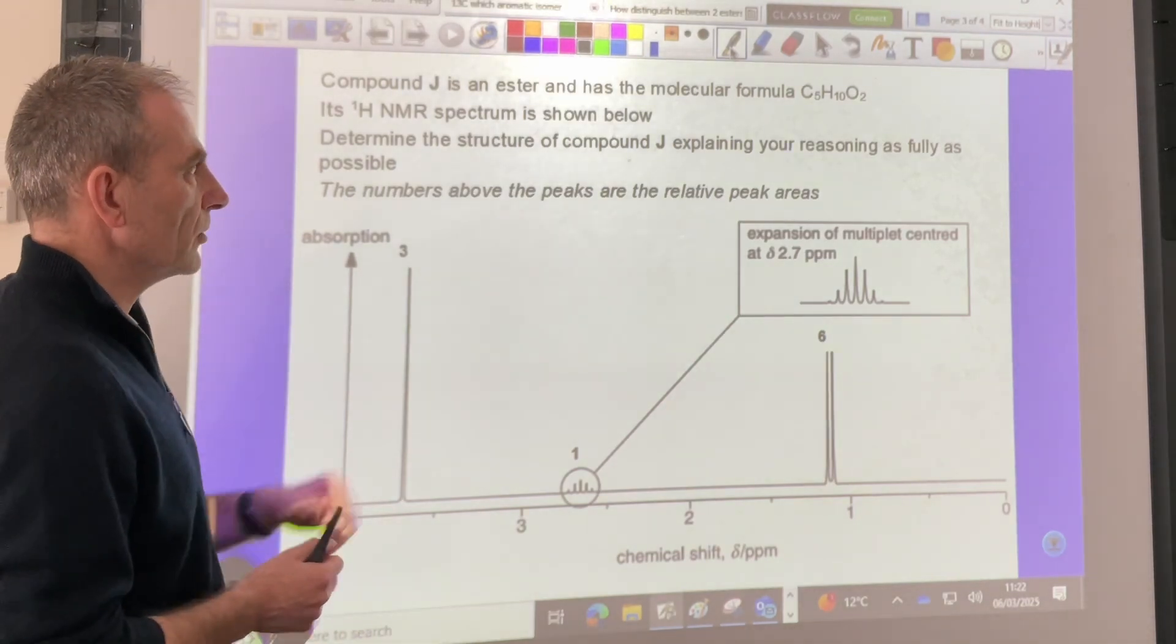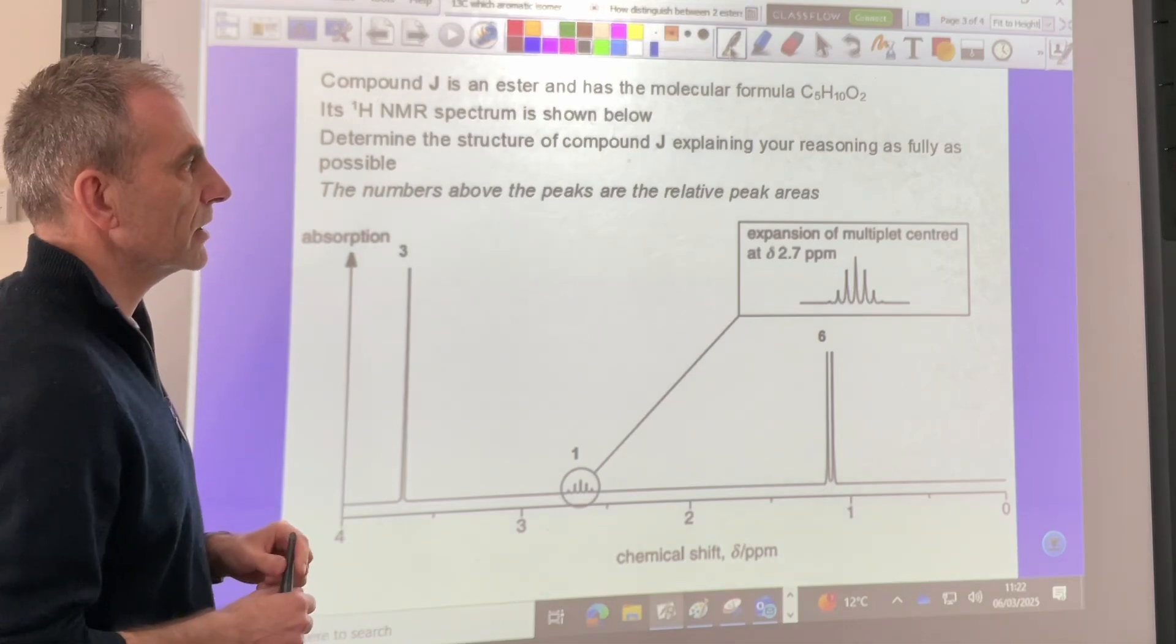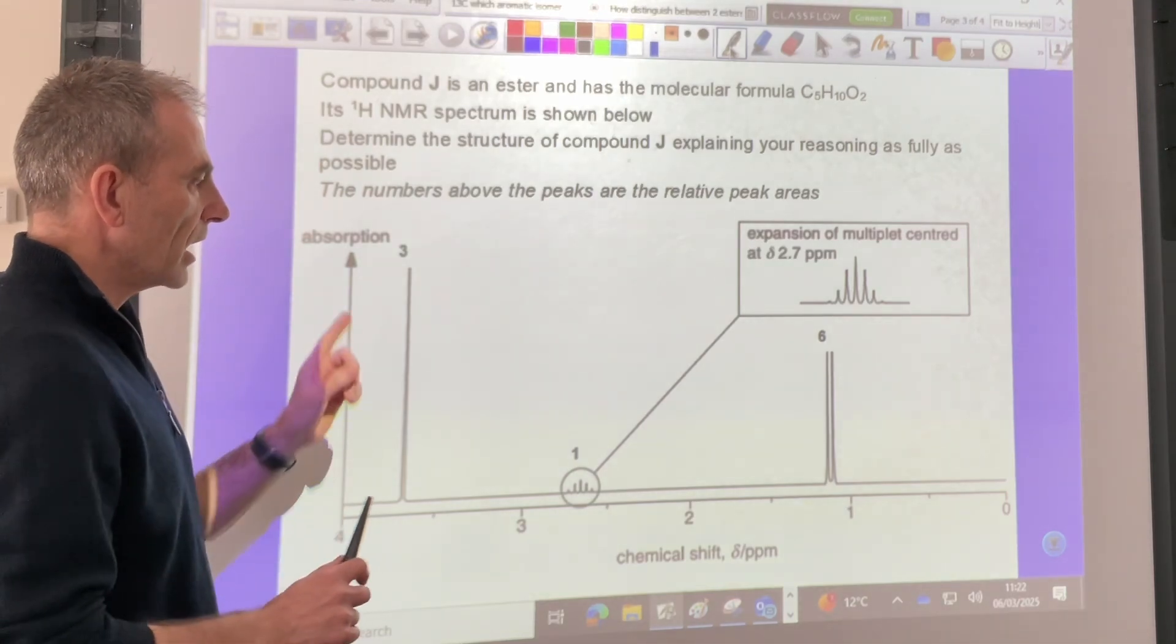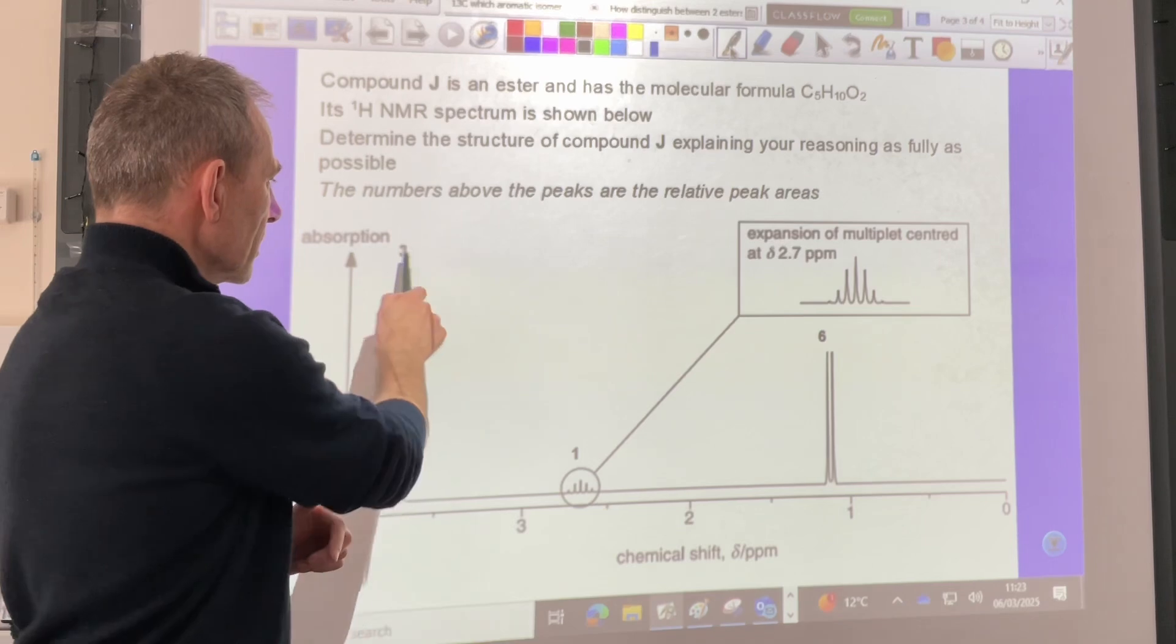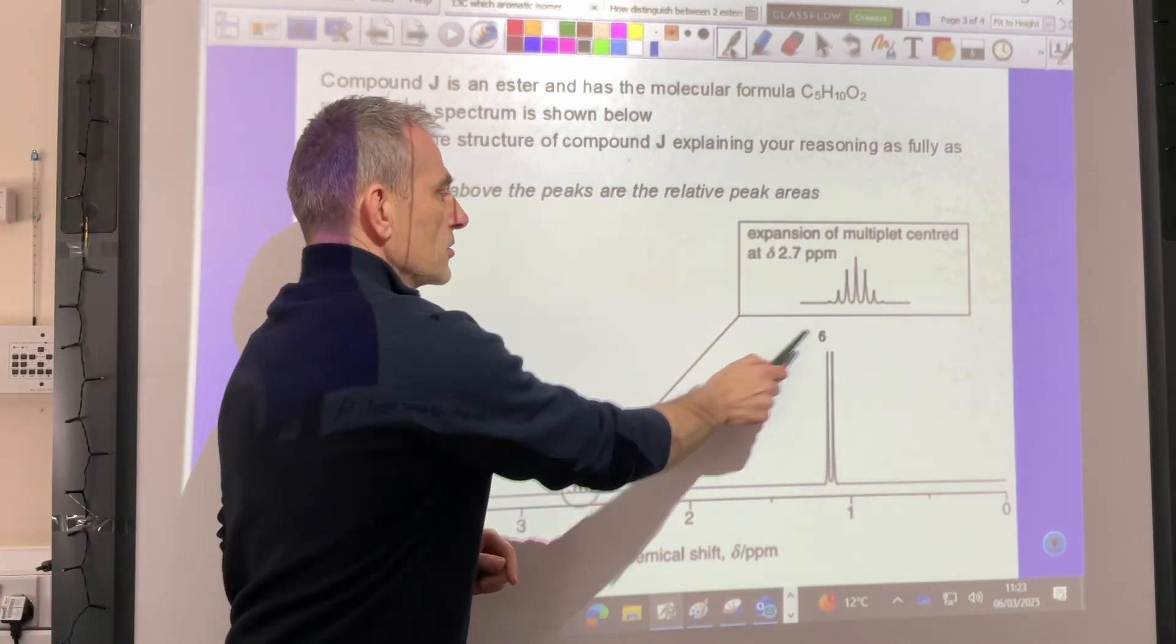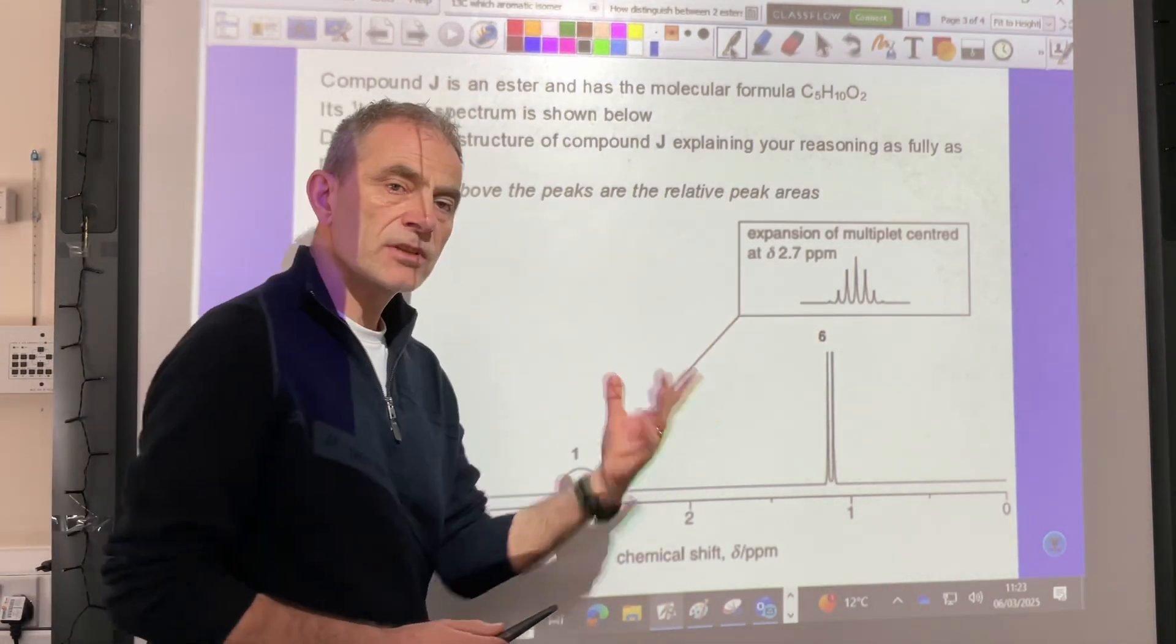So we know the molecular formula C5H10O2. A quick count up of the peak areas here, the numbers above the peaks, we've got 3, 1, 6, which adds up to 10.